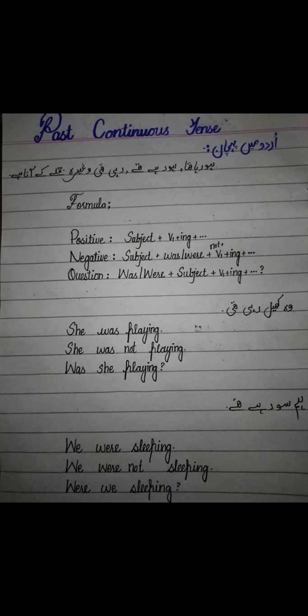Positive sentence کا فارمولا یہ ہے: سب سے پہلے subject آئے گا، پھر was یا were آئے گا، اور پھر first form of verb آئے گی ing کے ساتھ — یہ آپ کا positive sentence complete ہوگیا۔